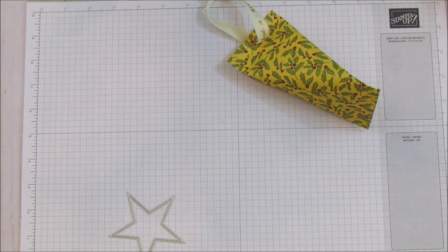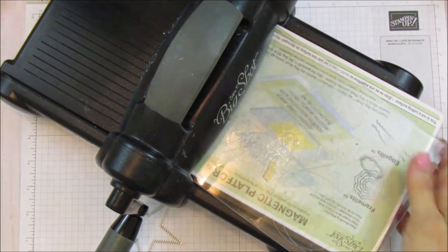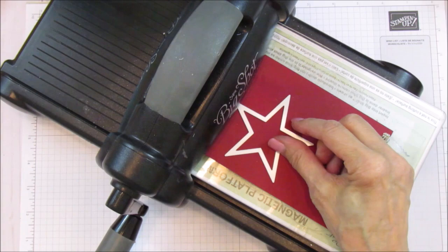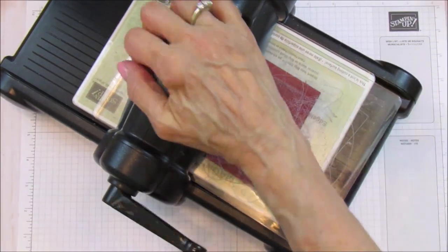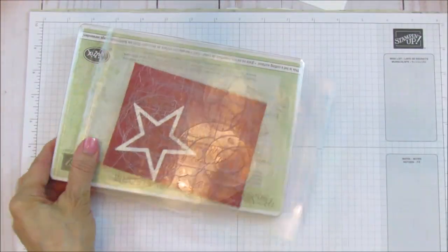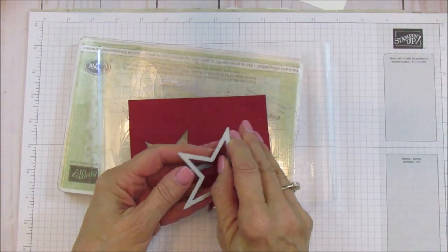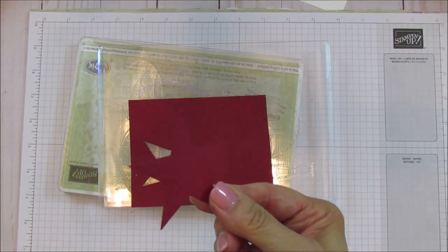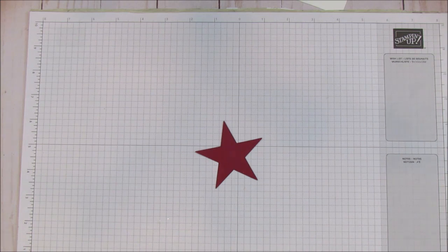So I'm going to use my cherry cobbler and it's so pretty because it's stitched. You probably can't see it that well in the camera, but it's really, really pretty.